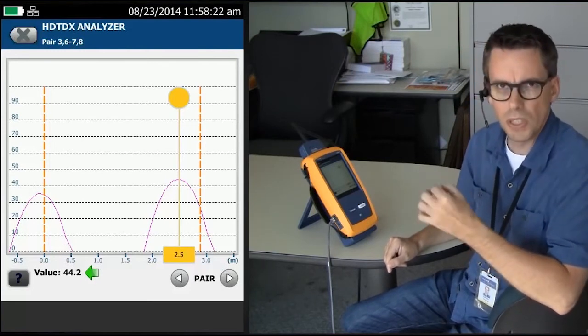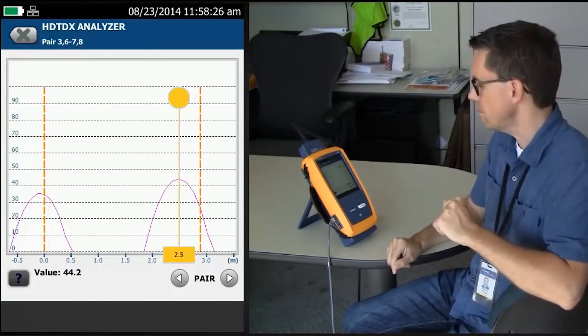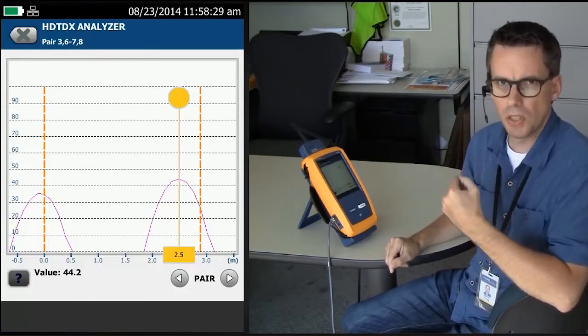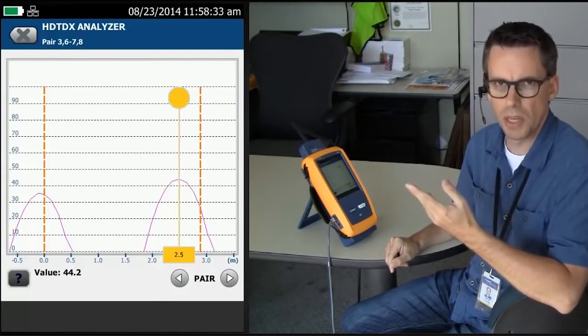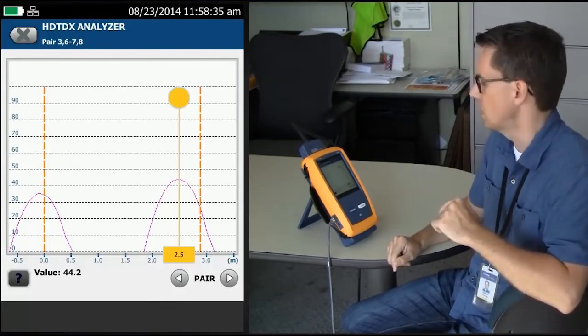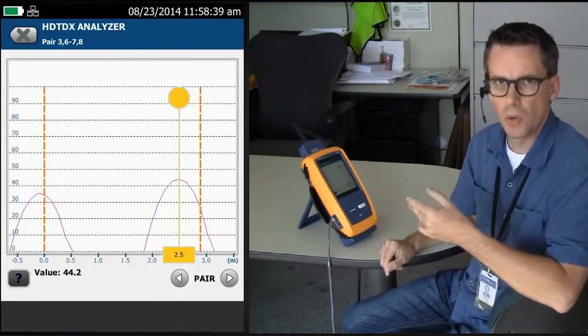Ideally, we want to see 30. 30 to 35 is ho-hum. 35 to 40, you're going to start seeing your margins come down. And anything after 40, you're likely to be seeing failing test results. So at 44.2, that is not good enough.